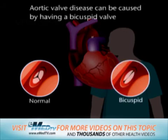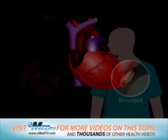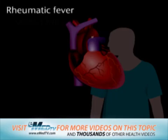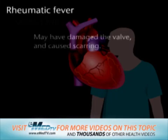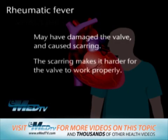Over time, the bicuspid valve can weaken and may leak or become narrow. A less common cause of valve disease is an infection called rheumatic fever. This infection may have damaged the valve and caused scarring, making it harder for the valve to work properly.